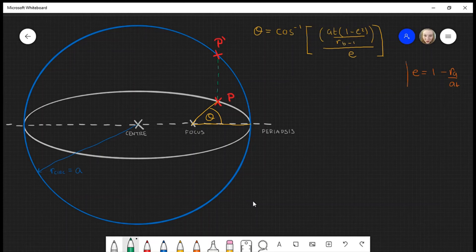Using the center, I'm going to draw a line between P prime and the center. The angle between the periapsis, the center, and point P prime is known as EA, or the eccentric anomaly. The eccentric anomaly has to be in radians and is given by this equation.